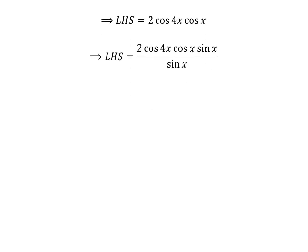Multiplying the numerator and denominator by the common factor sine of x does not change the value of the fraction. We know cosine of x upon sine of x equals cotangent of x. So the left-hand side of the equation equals 2 times cotangent of x times cosine of 4x times sine of x.